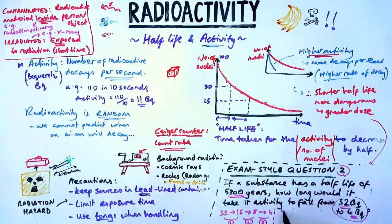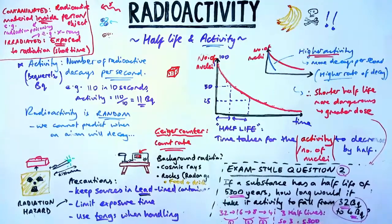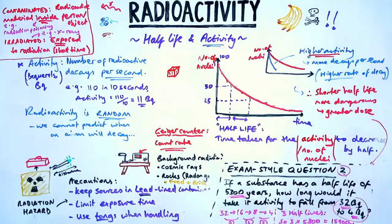So 32 to 16 is once, 16 to 8 is another, and 8 to 4 means it's three times it's halved. So it's three half-lives. So all we've got to do then is take the value of one half-life, which is 5,300 years, and multiply it by three because it's halved three times. And that's how you can get full marks on questions involving half-lives.